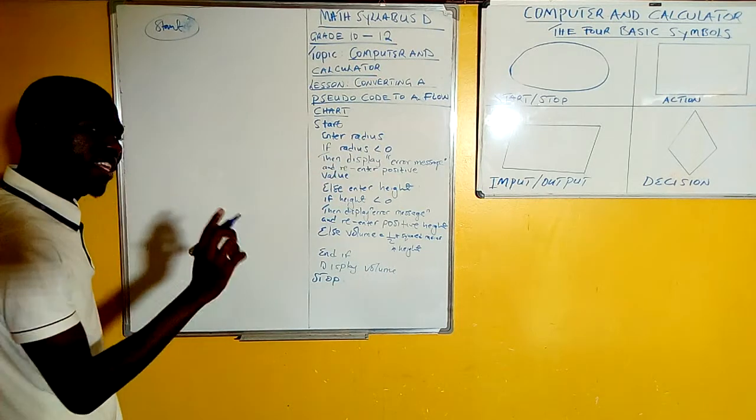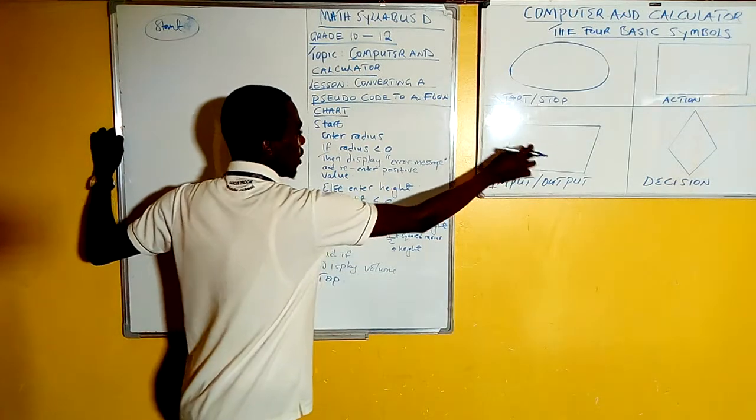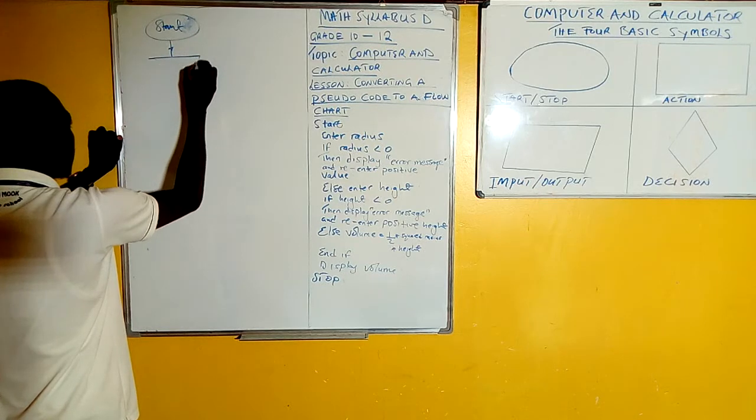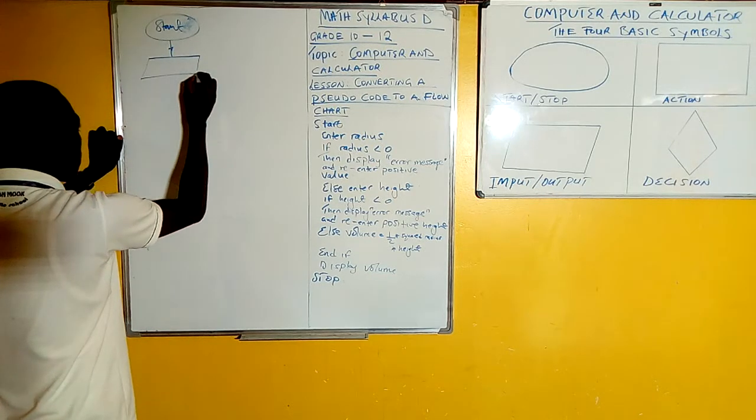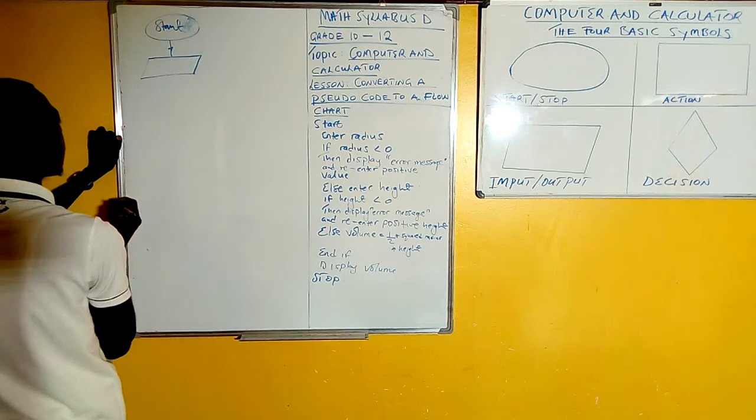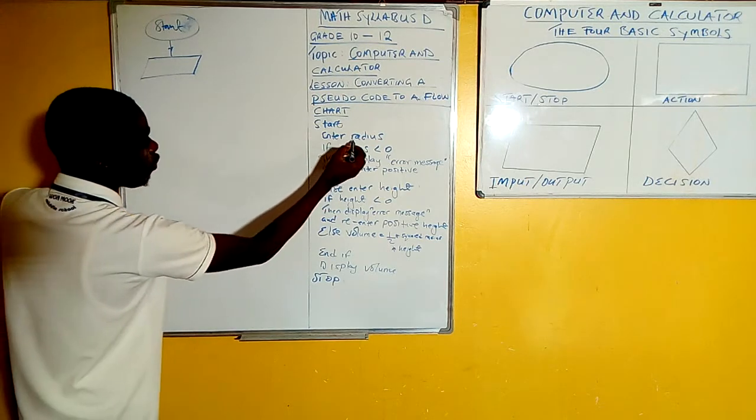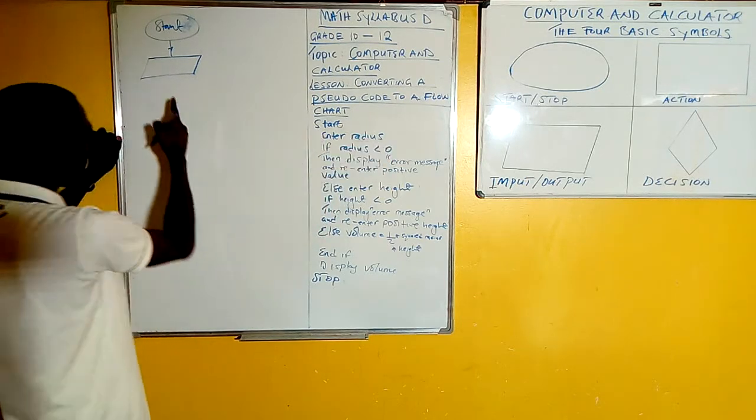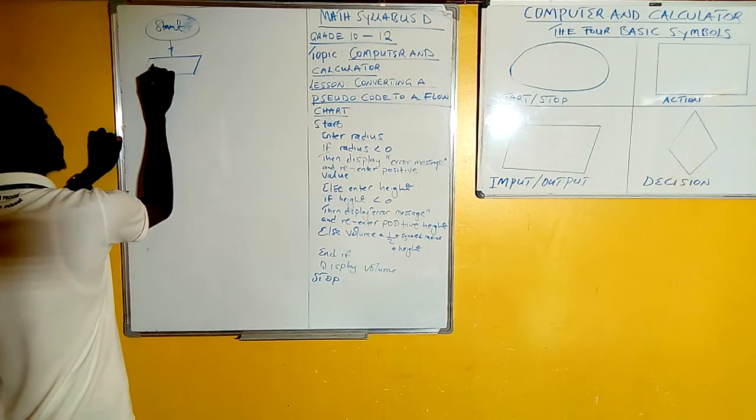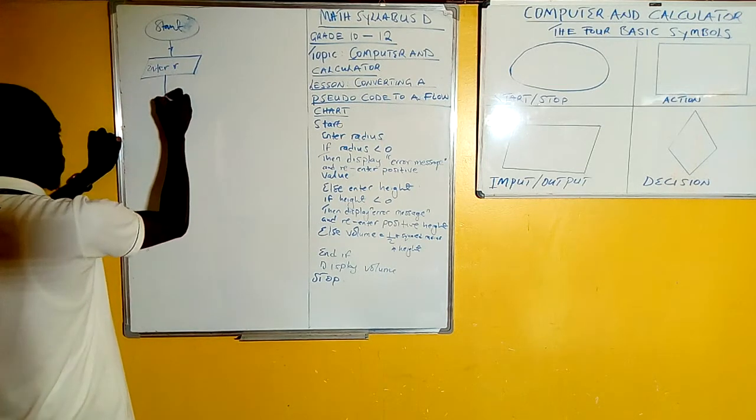Then the next thing they are saying, enter radius. Everything that you are entering into something is called an input, and the input box is this one. So you are going to connect using an arrow, then we'll draw the input. Draw a parallelogram nicely. It shouldn't be questionable. Everyone should be able to see that it is a parallelogram. Here on the pseudocode, you write the full words like that, radius. But when it comes to here, you are going to write only the symbols. So we are going to say enter r.